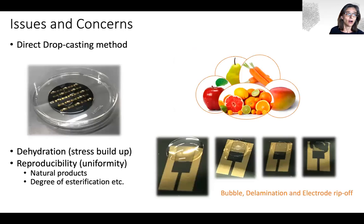The use of pectin also comes with issues and concerns. For one, pectin is extracted from different types of fruits and different batches. Pectin comes with different properties such as esterification and different molecular structures, so we have issues in uniformity and reproducibility.